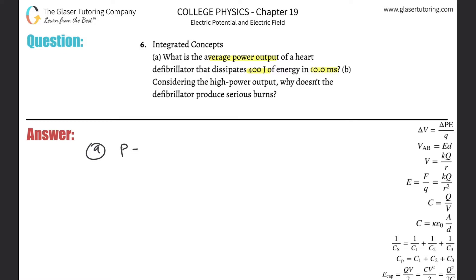Power is always equal to the change in energy divided by the change over time in which that energy is being absorbed or released. In this particular case, the energy being dissipated is 400 joules. The time is in milliseconds, but we need that in seconds.